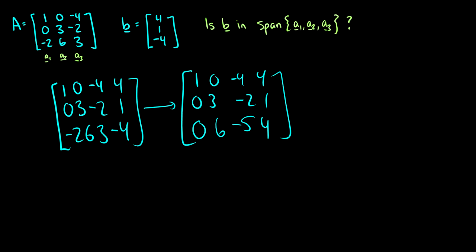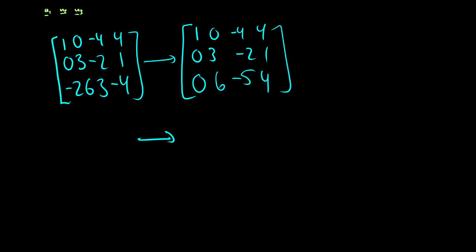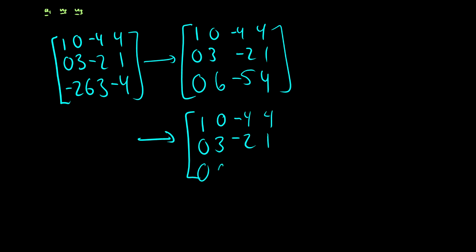Now we keep row one the same, keep row two the same, and take row three minus two times row two: six minus two times three is zero, negative five plus four is negative one, and four minus two is two. So in this step we took row three minus two times row two.